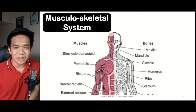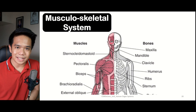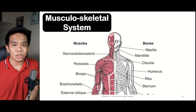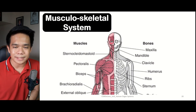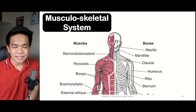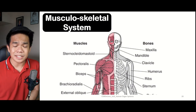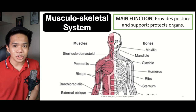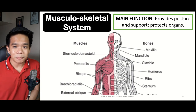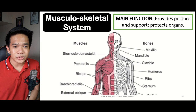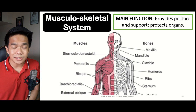The blood vessels and the fat layers in the hypodermis are responsible for the regulation of temperature in the body. Now let us go to the musculoskeletal system. As the name implies, the musculoskeletal system is a combination of two organ systems — the skeletal system and the muscular system. Its main function is to help for the protection of the different organs, as well as providing the support and structure of the body.